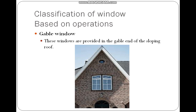The gable window is provided in the gable end of a sloping roof. The gable is the triangular area at the top of a sloping roof, and the window placed there is called a gable window, as seen in the picture.